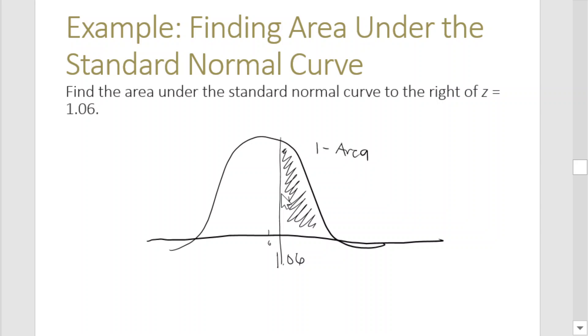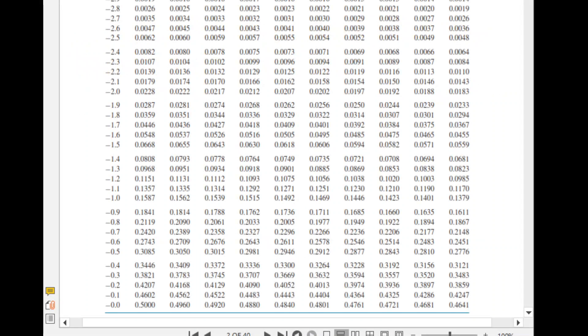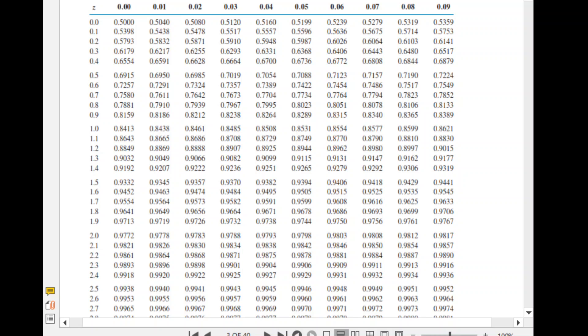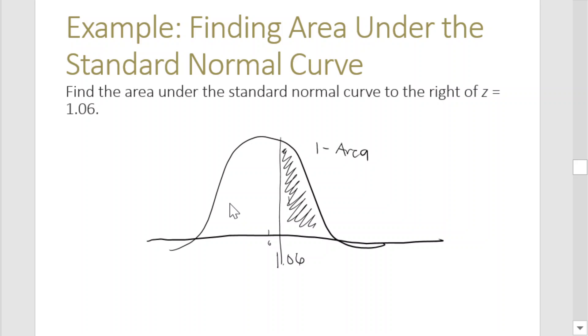So with that, let's get the value of the area for 1.06 from our table. Let's check our table. It's positive, so positive 1.0, then the second decimal 6. So the value is 0.8554.